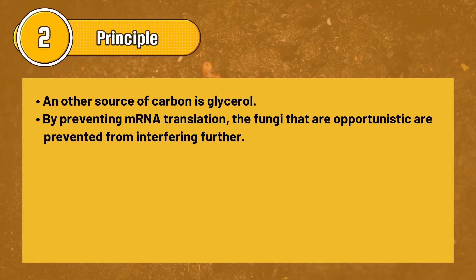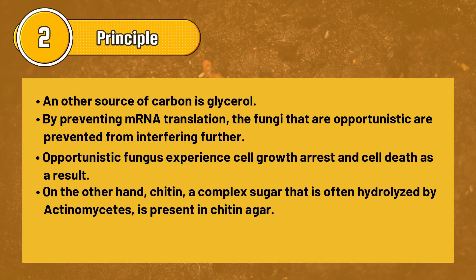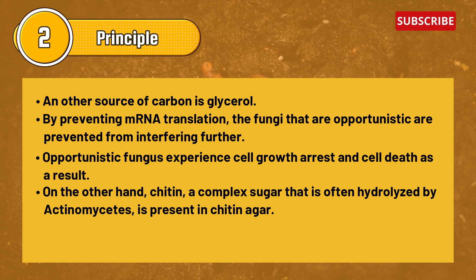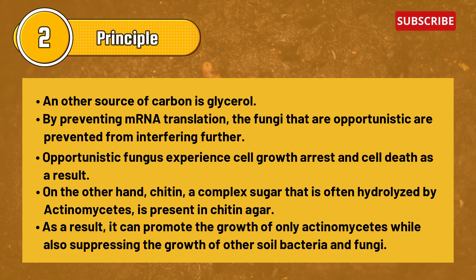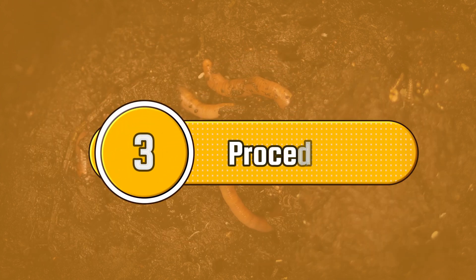By preventing mRNA translation, opportunistic fungi are prevented from interfering; they experience cell growth arrest and cell death as a result. On the other hand, chitin agar contains chitin, a complex sugar that is often hydrolyzed by actinomycetes, which promotes the growth of only actinomycetes while suppressing the growth of other soil bacteria and fungi.